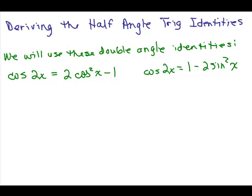We're going to derive the half angle trig identities and we're going to use these double angle identities for the cosine of 2X. One of them is cosine of 2X equals 2 cosine squared X minus 1, and the other one we'll be using is cosine of 2X equals 1 minus 2 sine squared X. Let's start with this first one: cosine of 2X equals 2 cosine squared X minus 1.